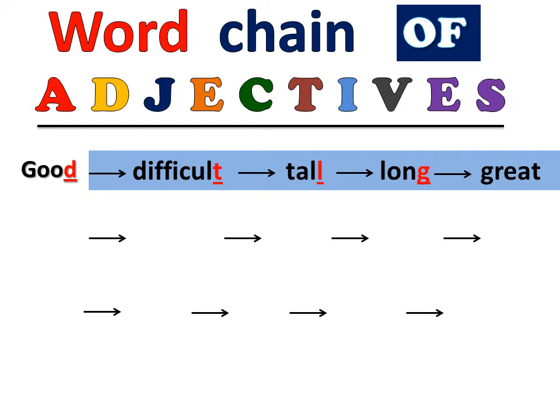In this way, complete the word chain of adjectives. What do we do here? Take the last letter of that adjective and from that letter, form a new adjective. This way we form word chain of adjectives. Let me give you another example.